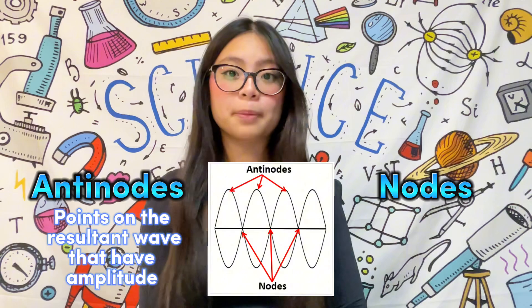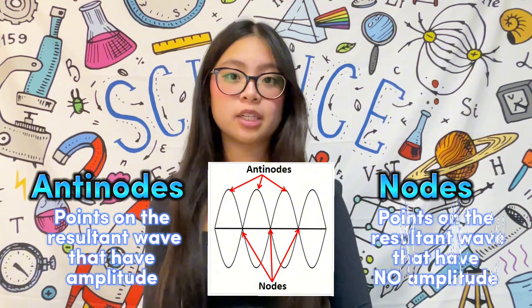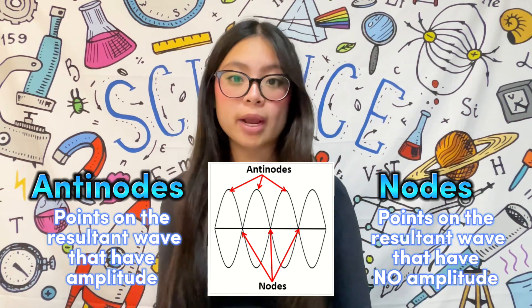We can introduce two new terms, antinodes and nodes. Antinodes are places on the resultant wave that have amplitude, whereas nodes are places on the resultant wave that have no amplitude.